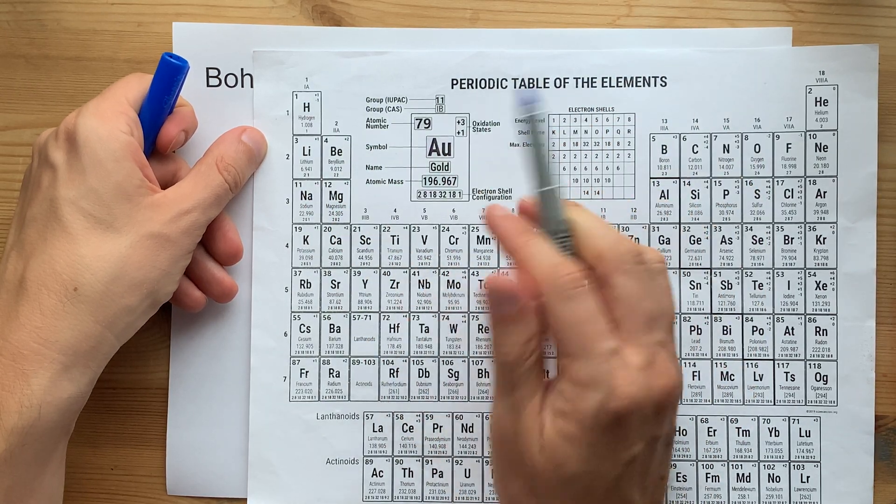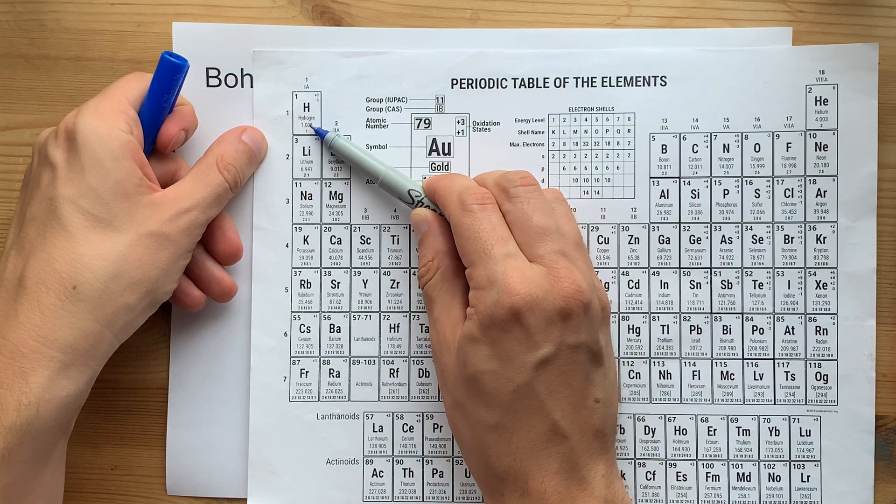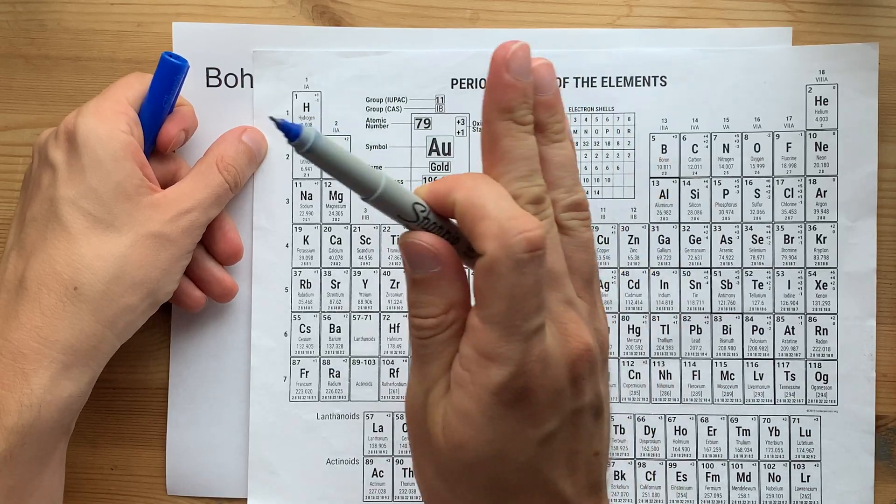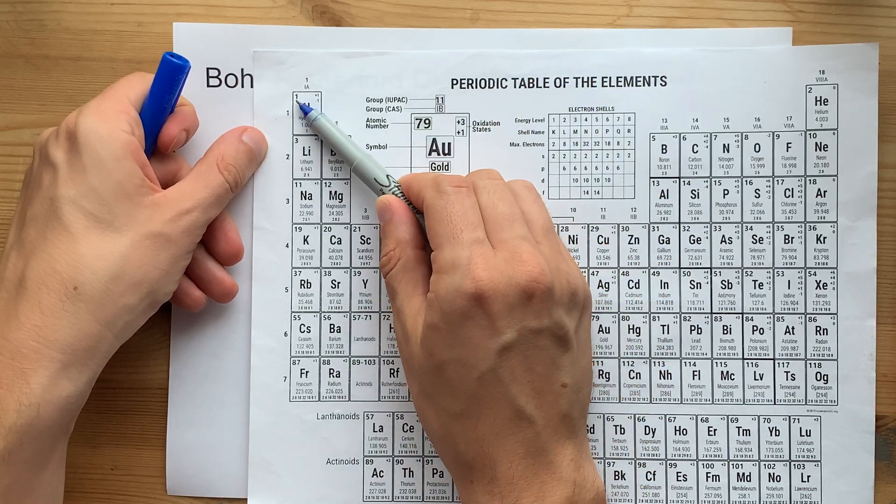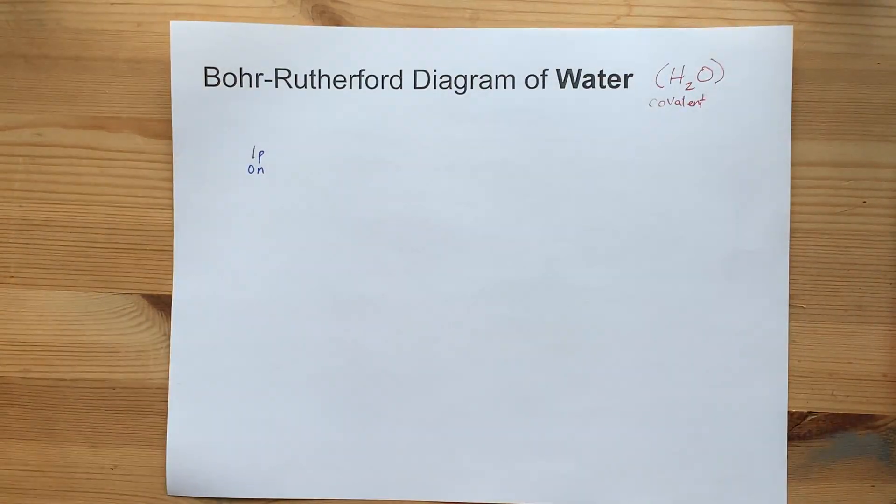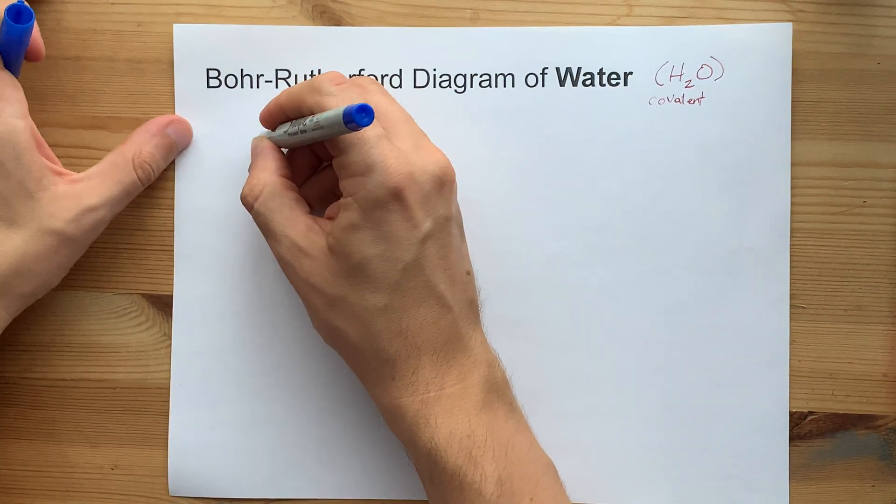That mass is equal to protons plus neutrons. Put another way, the number of neutrons is the atomic mass, usually rounded to the nearest whole number, minus the atomic number.